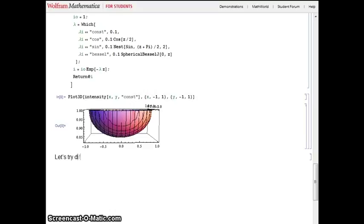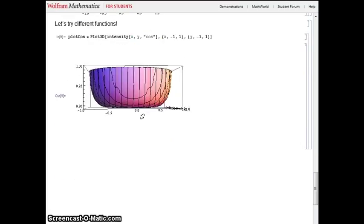Now let's look at our new density functions. The first one is the cosine function. You can see that the shape is not quite a hemisphere and now looks a bit closer to a cylinder.